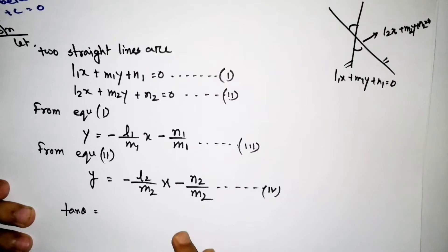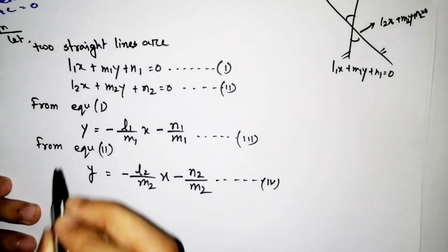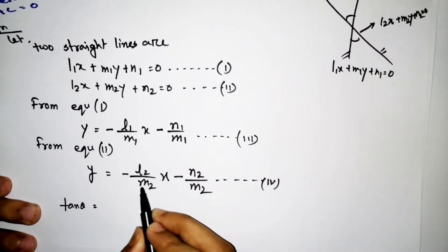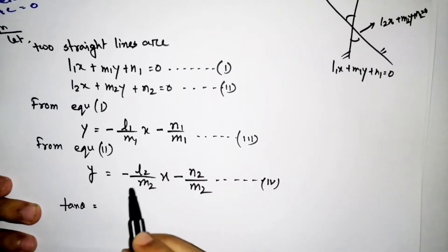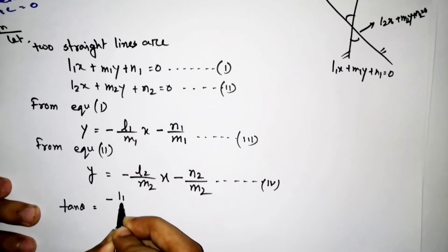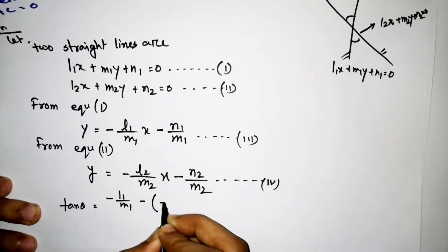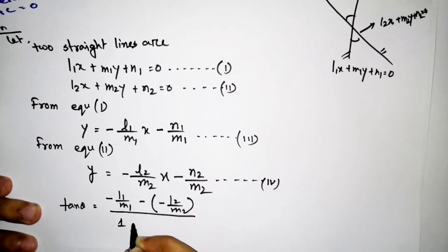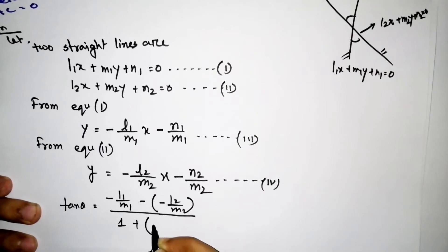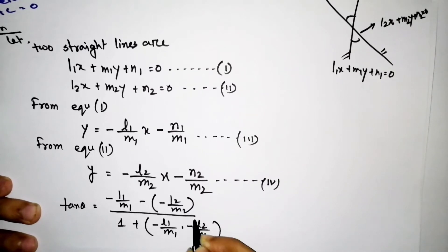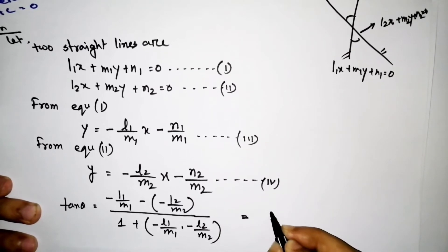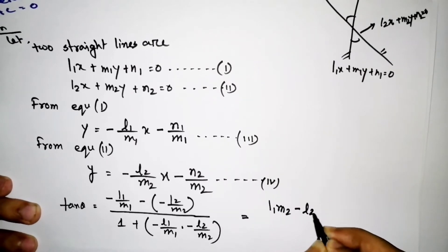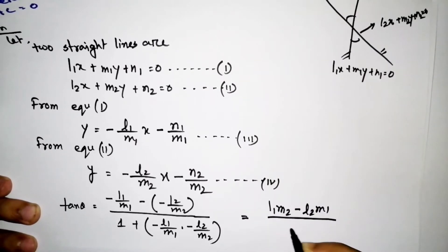We compute the product of the two line expressions: 1 plus m₁ into m₂, giving us m₁ and m₂. Then we get minus l₁m₁ minus l₁m₂, 1 plus m₂ minus l₂m₂, and the term l₁m₂ minus l₂m₁ plus m₁m₂ plus l₁l₂.